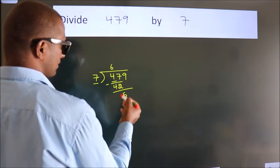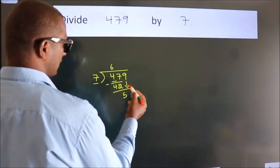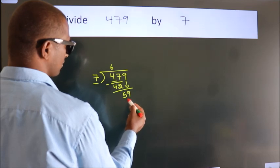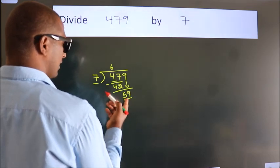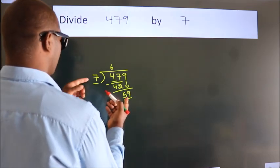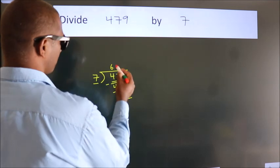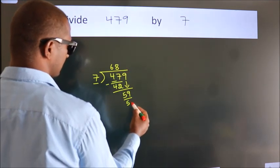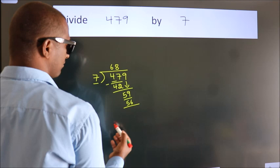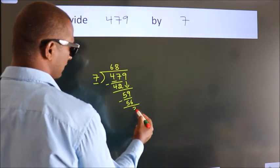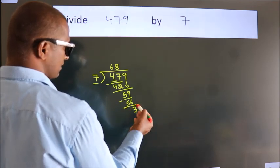After this, bring down the next number. So 9 down, giving us 59. A number close to 59 in the 7 table is 7 times 8, which is 56. Now we subtract. We get 3.